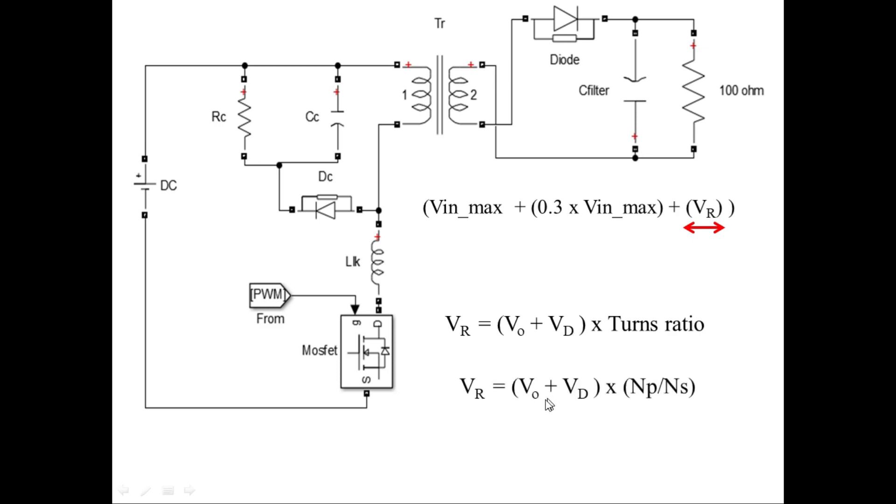If we calculate the VR value for our topology, it is given by these equations which comes out to be almost 106 volts. When compared to the voltage applied to the snubber network in the previous case, it will be around 760 volts. Hence, the latter arrangement is much more suitable.